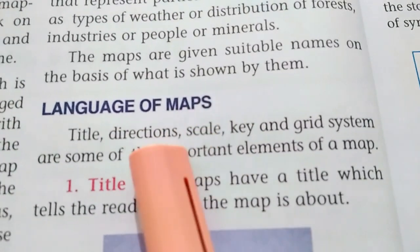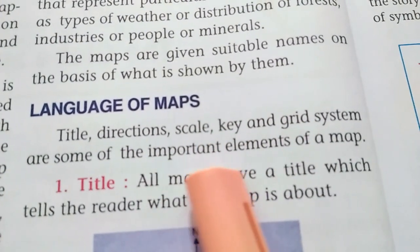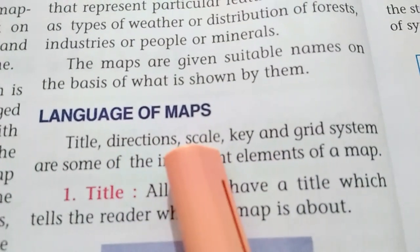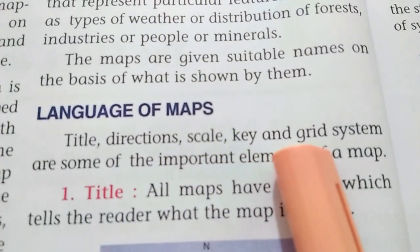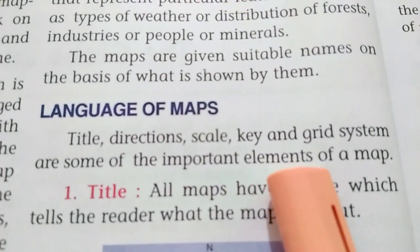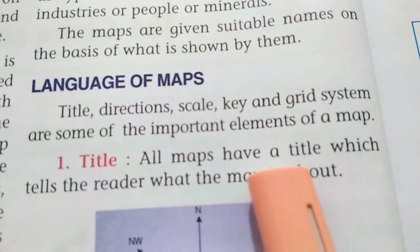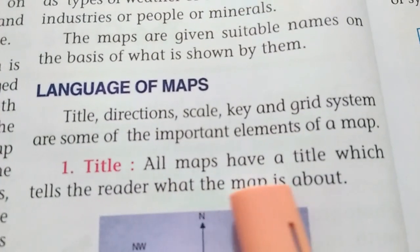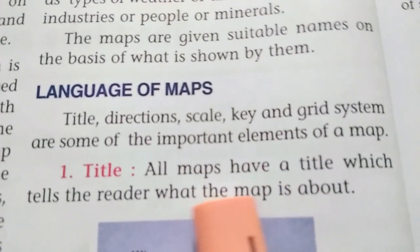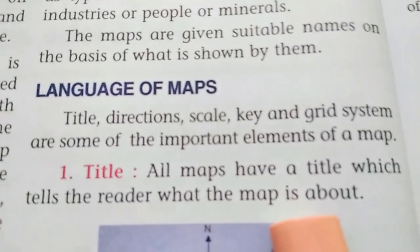Language of maps: Title, Direction, Scale, Key, and Grid System are some of the important elements of a map. All maps have a title which tells the reader what the map is about.